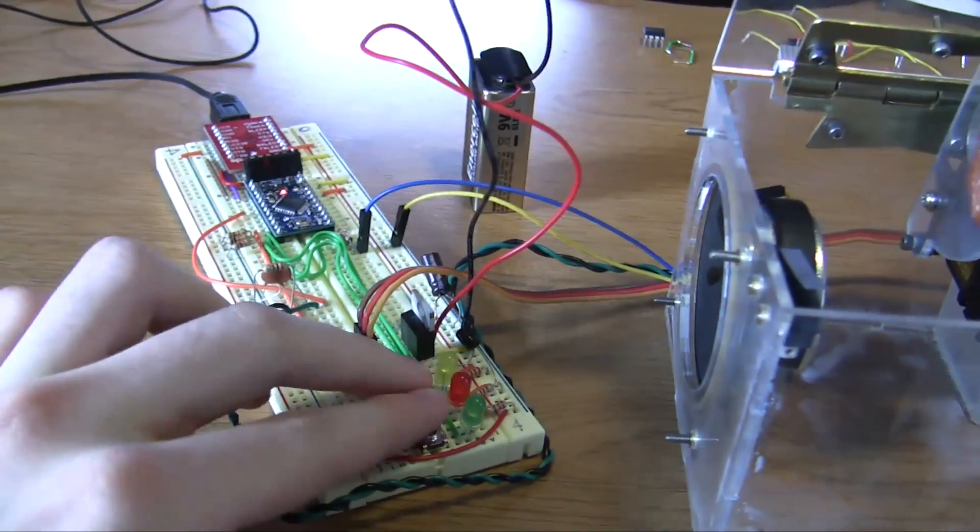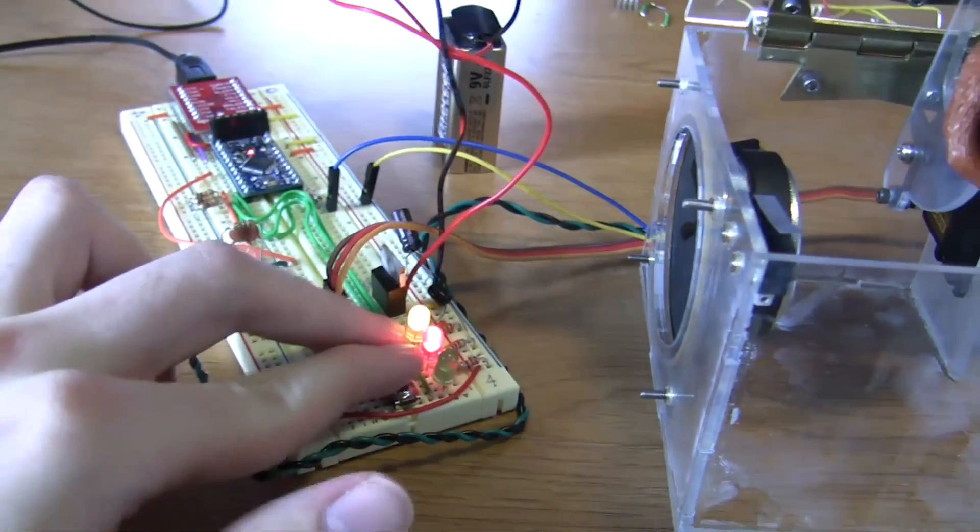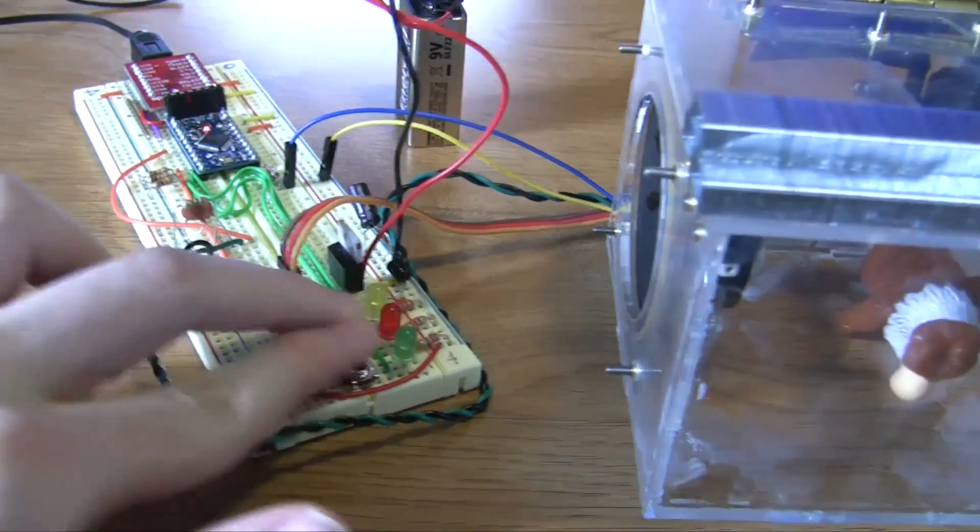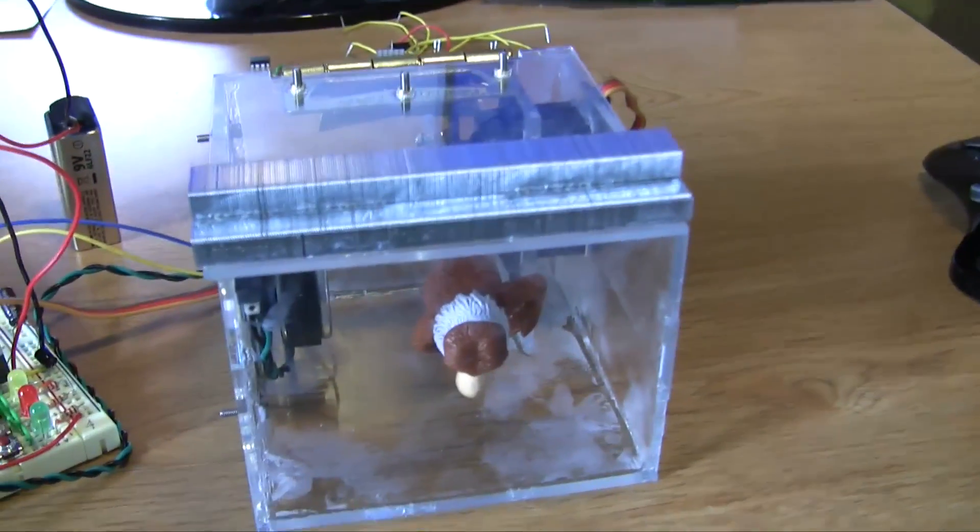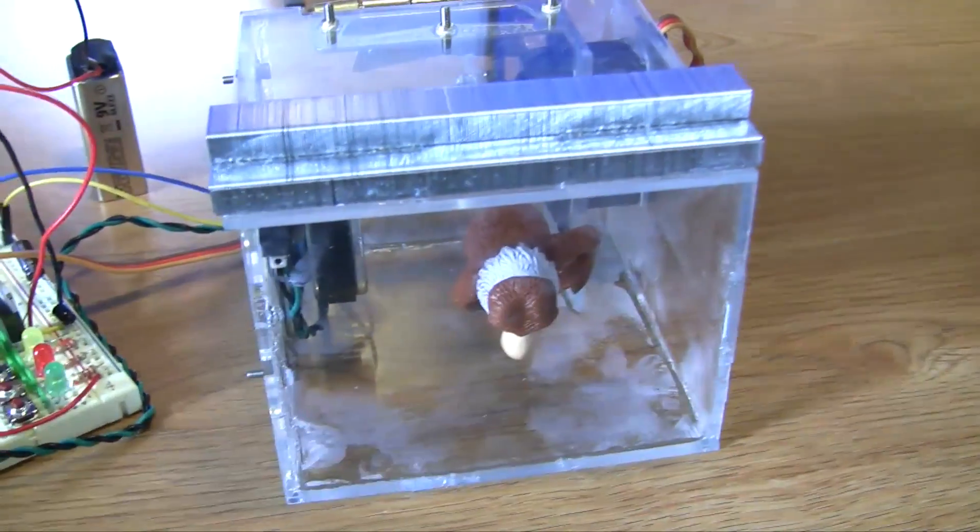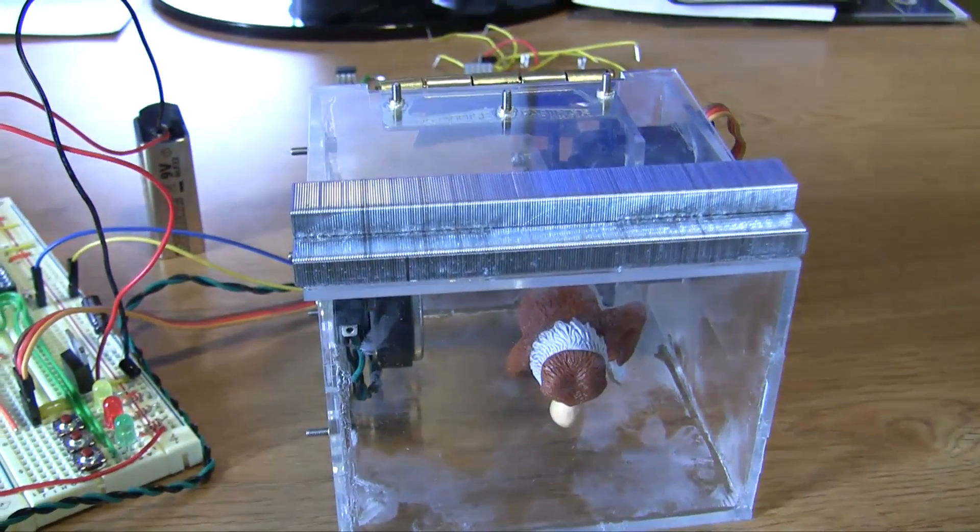Now to close the box again, once you've entered the code, what you do is you actually press all three buttons at once, the box closes, and you're ready to do it again. And that is my Jack in the Box project.